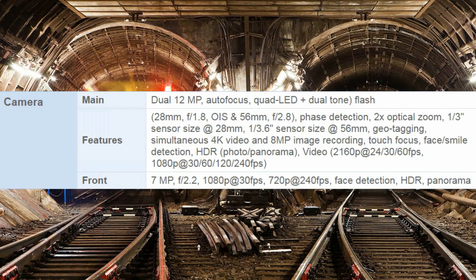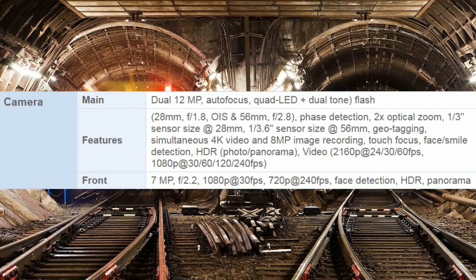Camera: dual 12 MP main camera with autofocus, quad LED plus dual tone flash. Features: 28mm f/1.8 OIS and 56mm f/2.8. Phase detection, 2x optical zoom. One-third inch sensor size at 28mm, one-third point six inch sensor at 56mm. Geotagging, simultaneous 4K video and 8MP image recording, touch focus, face and smile detection.